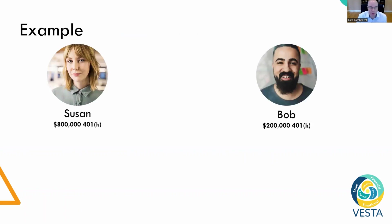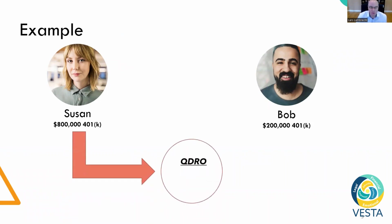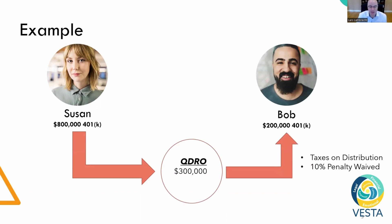Let's go through an example of how a QDRO would work. In this particular case, Susan has $800,000 in a 401(k) and Bob has $200,000 in a 401(k). So they decide to set up a QDRO. Susan transfers $300,000 into the QDRO, and then Bob has access to that $300,000.